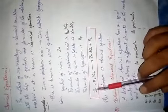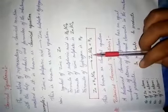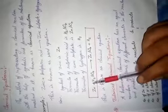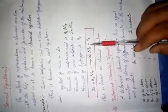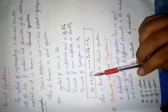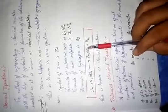For example, on the reactant side we have one zinc atom, and on the product side we also have one zinc atom. Hydrogen: H₂ means 2 hydrogen atoms on the reactant side, and 2 on the product side. Sulfur: 1 atom on each side. Oxygen: 4 atoms on the reactant side and 4 on the product side.